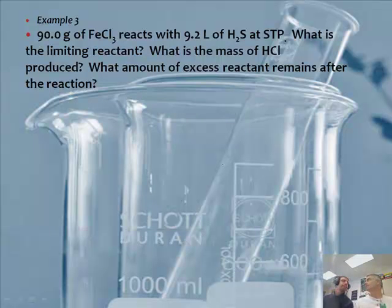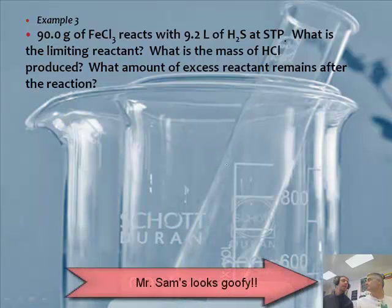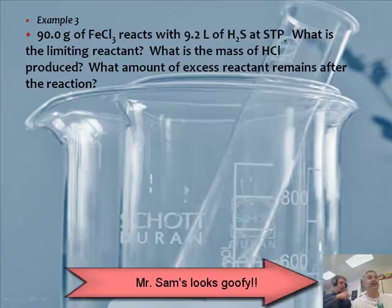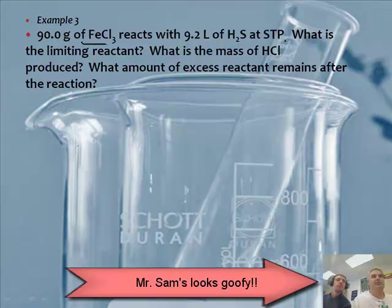Example number three. So 90 grams of FeCl₃ reacts with 9.2 liters of H₂S at STP.